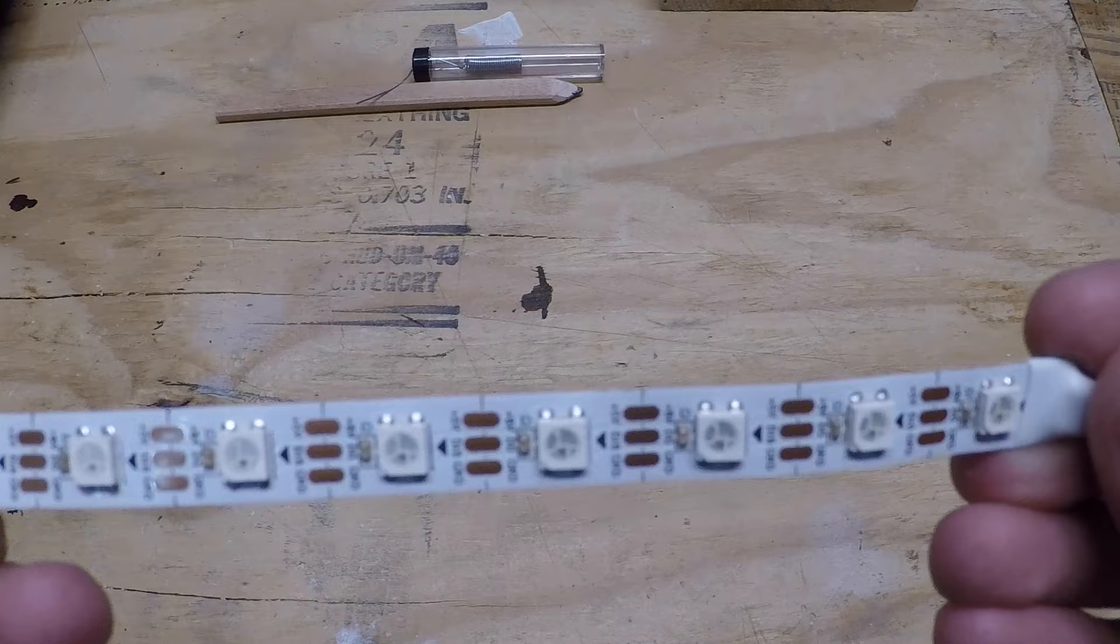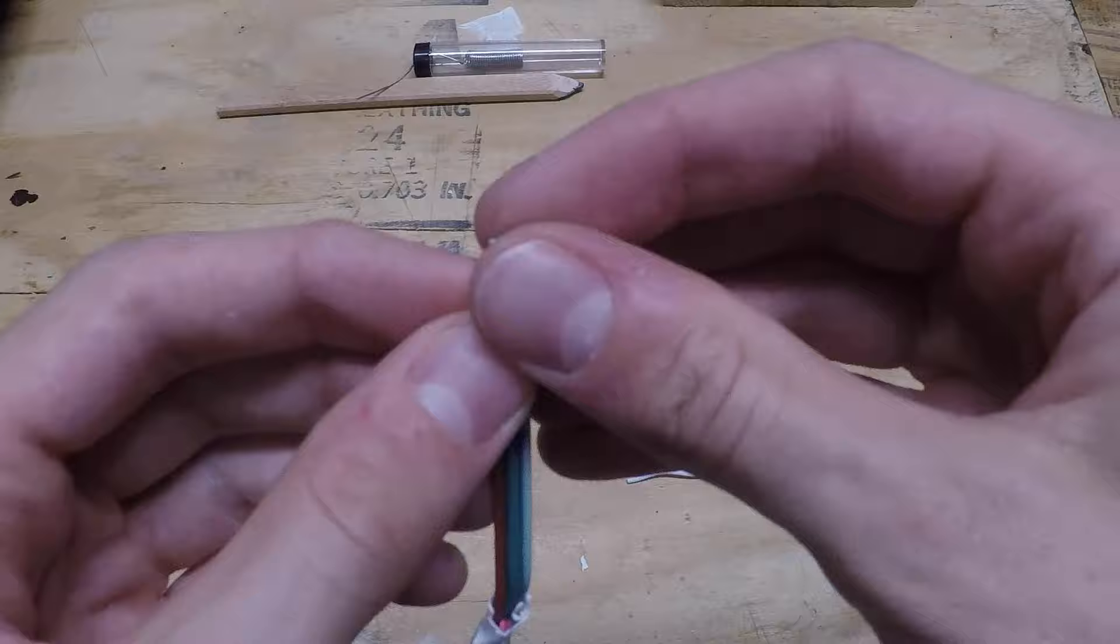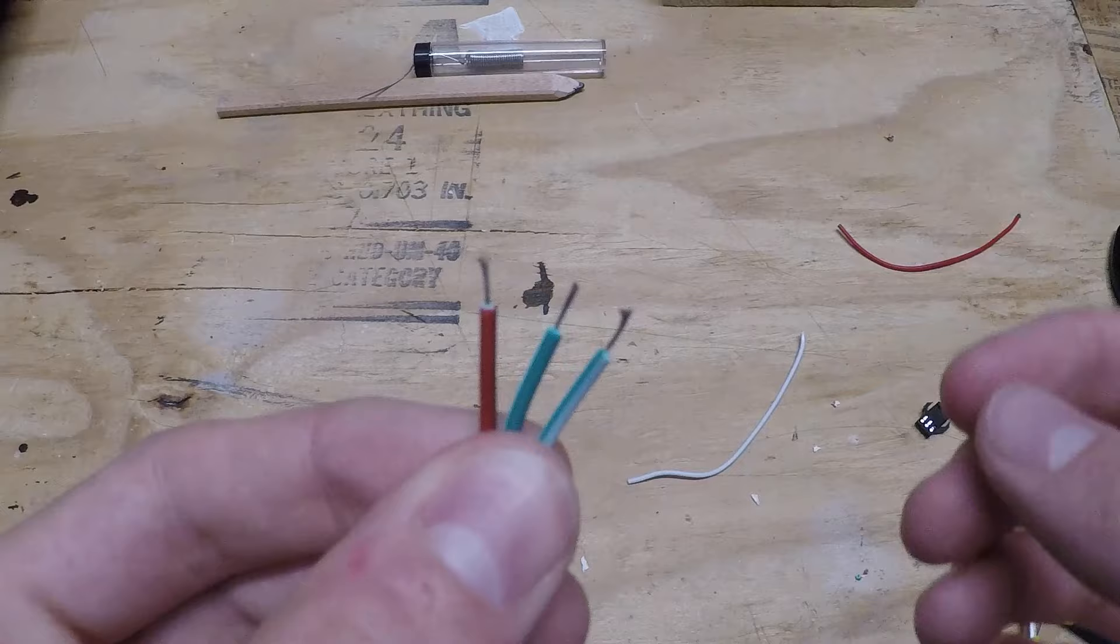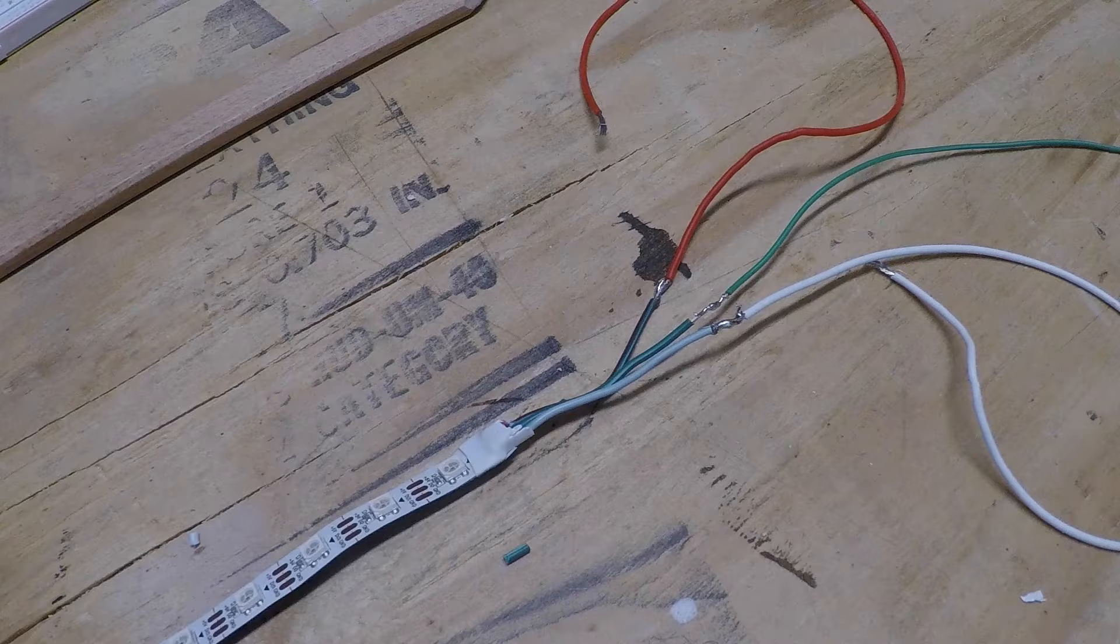So I'm going to cut off this connector it comes with and then solder it to some wires that have header pins on them, which means I can plug them into the Arduino. So I'll use a soldering iron to solder these joints. It's really not that hard. I'm pretty bad at it actually. But once I'm done I'll go ahead and wrap them in electrical tape to make sure they don't short out.